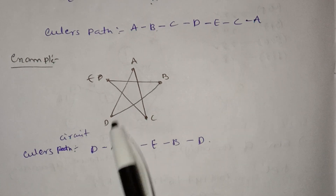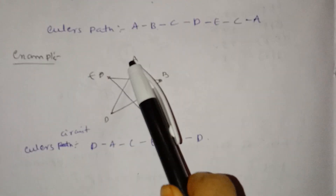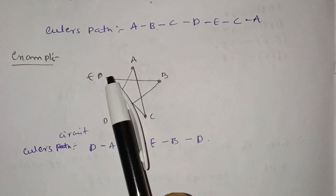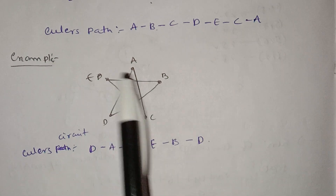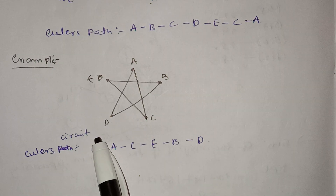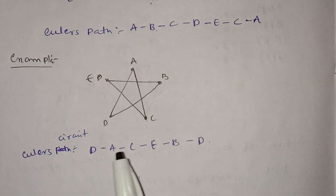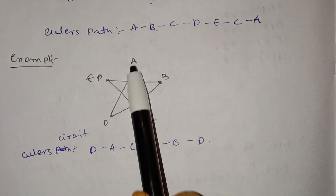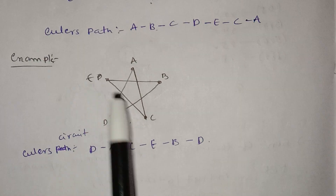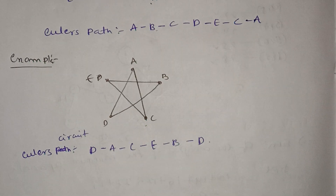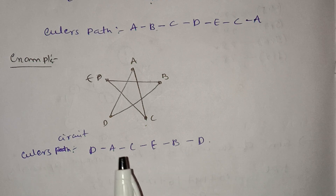The Euler circuit goes: D→A, A→C, C→E, E→B, B→D. This is an Euler's circuit or Euler's graph, where every edge is visited exactly once and the starting and ending vertices are the same.